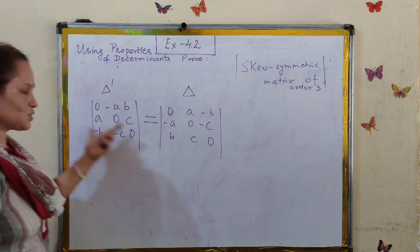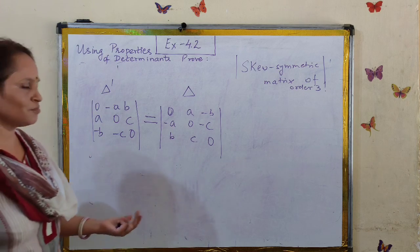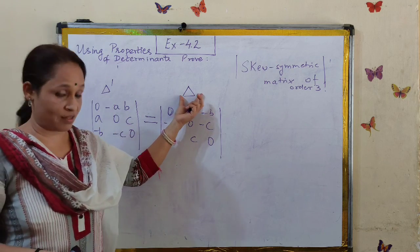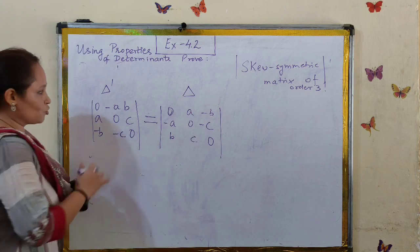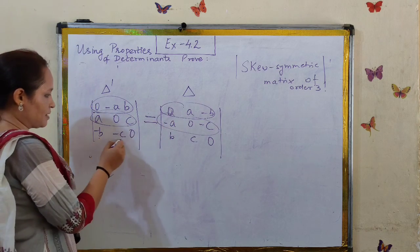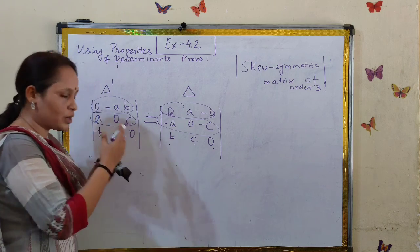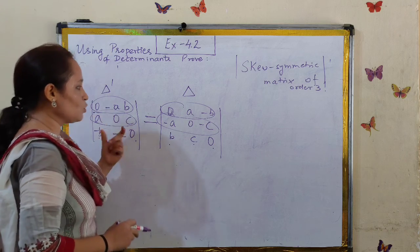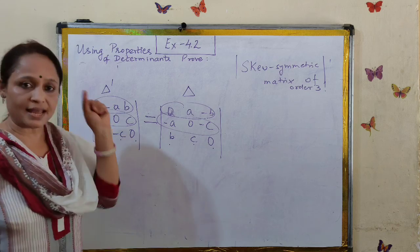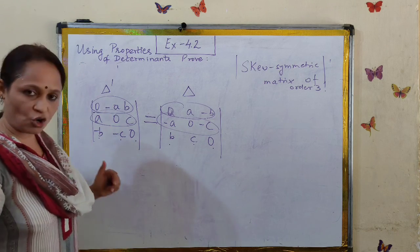If you pay attention to the entries of the determinants on both sides, they are clearly negatives of each other. Because after all, we have taken the transpose, and the transposed determinant has the same value as the original. So the entries are row-wise or column-wise negatives of each other in each row or each column.